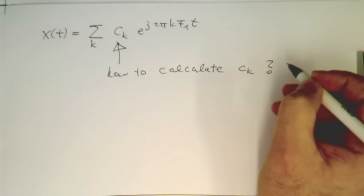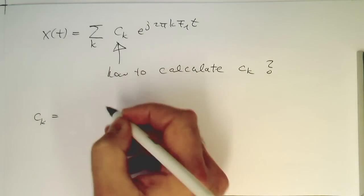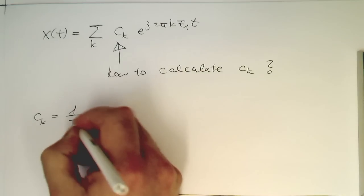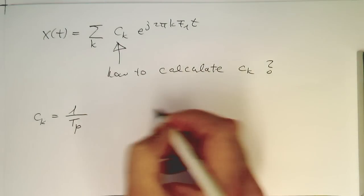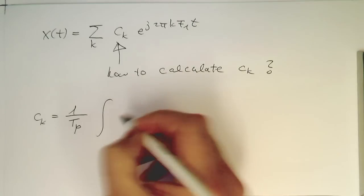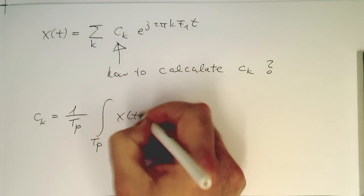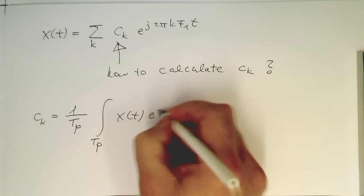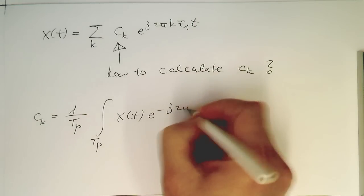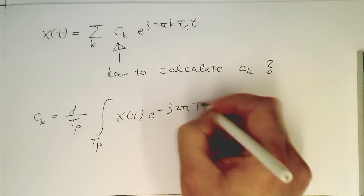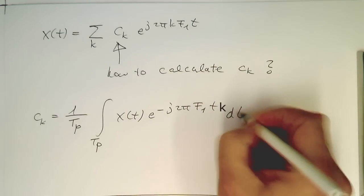And this is done by this formula here: ck equals 1 over tp, integrated over tp, x of t e to minus j 2π f1 t dt. So that's the time of one period of this signal.